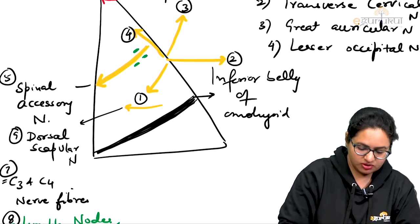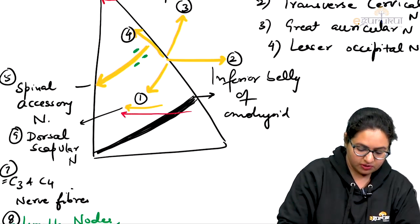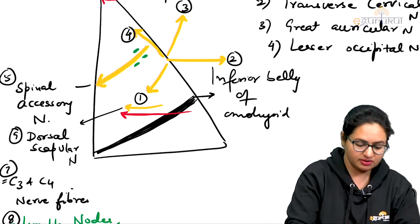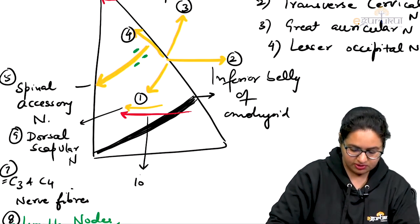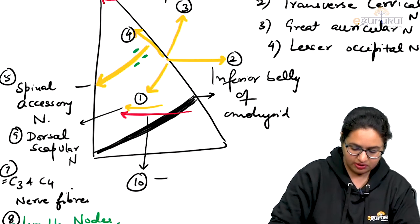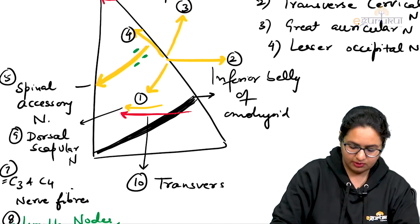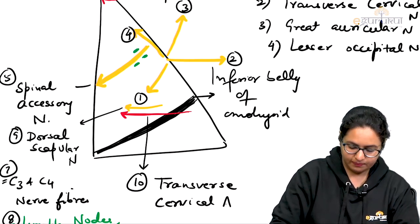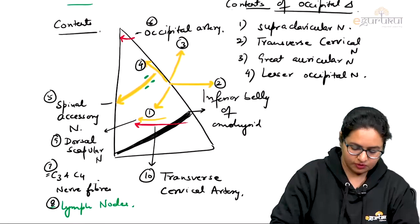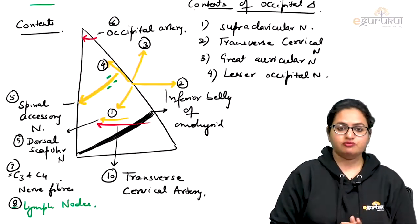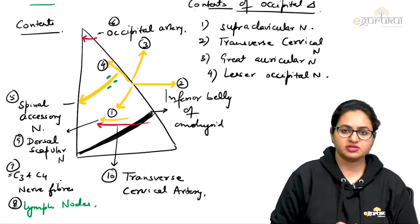Then we have an artery coming from the subclavian triangle, running backwards and horizontally — this artery is the transverse cervical artery, the 10th structure. All these structures are forming the contents of the occipital triangle.